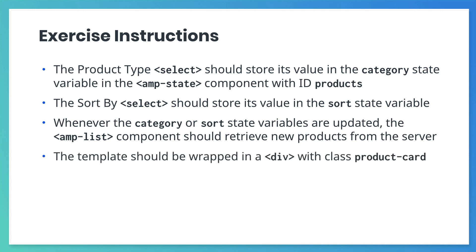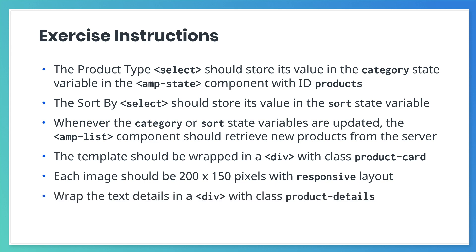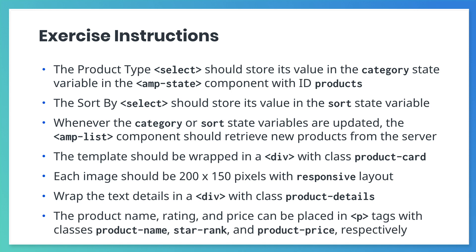Next up, these are the style requirements for this exercise. In the template, you'll want to add a div tag with a class product-card. Go ahead and set the size of each image to 200 by 150 pixels with responsive layout. Then wrap the text details in a div tag with class product-details. The product name, rating, and price can also be placed in p-tags with classes product-name, star-rank, and product-price. Now go ahead and pause the video and try it out for yourself.